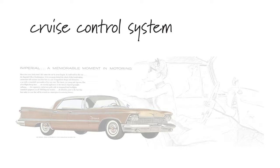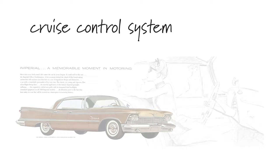The cruise control system is an example of an automatic control system, because it acts without human intervention.